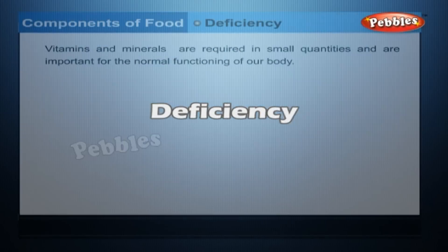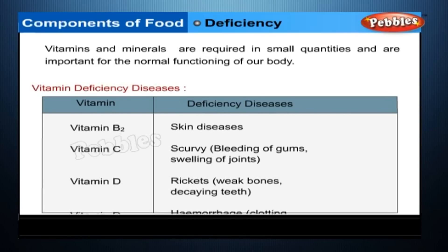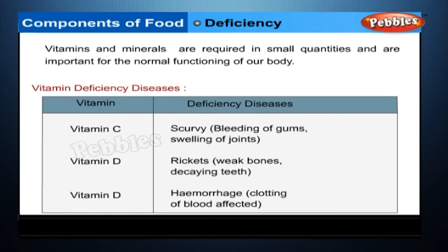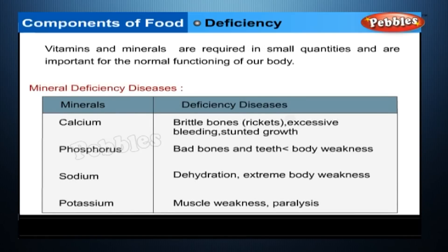Deficiency diseases due to vitamins and minerals are listed in the table. Vitamins and minerals are required in small quantities and are important for the normal functioning of our body.